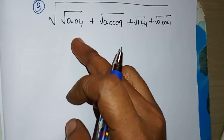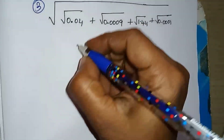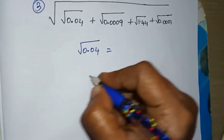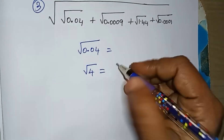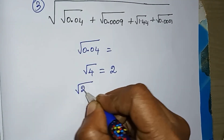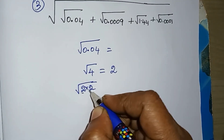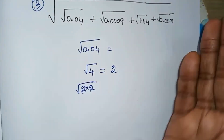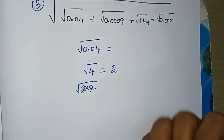The root values are very easy to solve. First, the root of 0.04. What do we do with root 4? We know it is 2. So for multiplication, 2 into 2 — 2 values are the same, so the root value is the same. This is the logic. So the root value of 0.04 — how do we do it?